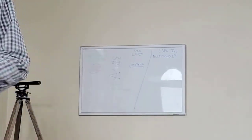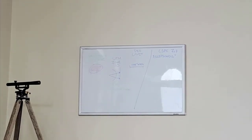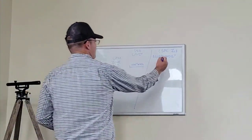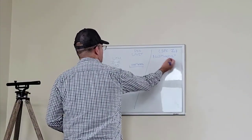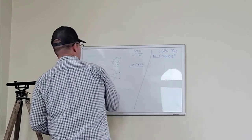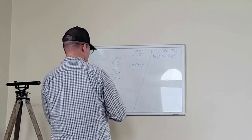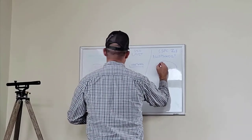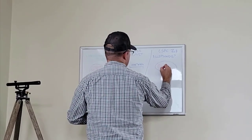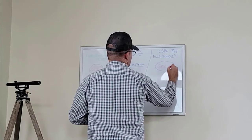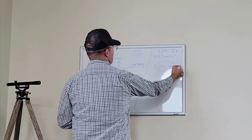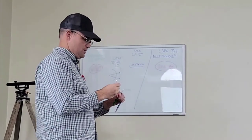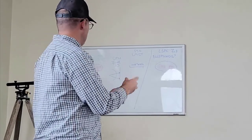If the ellipsoids aren't the same, it's got to figure out how to convert from one ellipsoid to another — that's a seven-parameter transformation called the Helmert transformation. But in this case, state plane coordinates use the same ellipsoid as UTM Zone 10, so QGIS does not have to change ellipsoids.